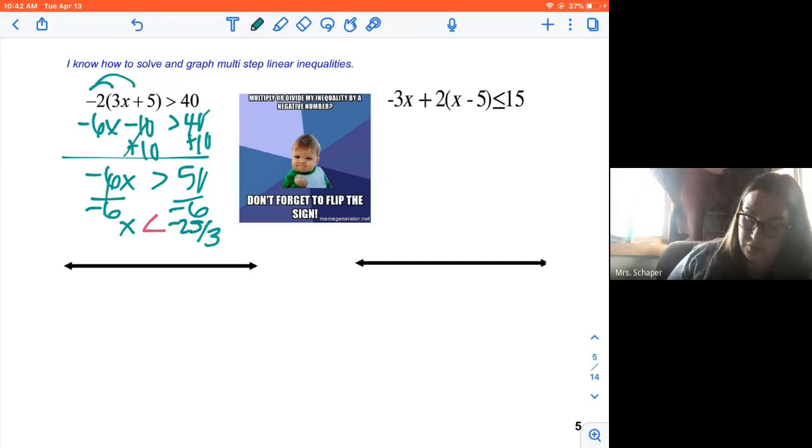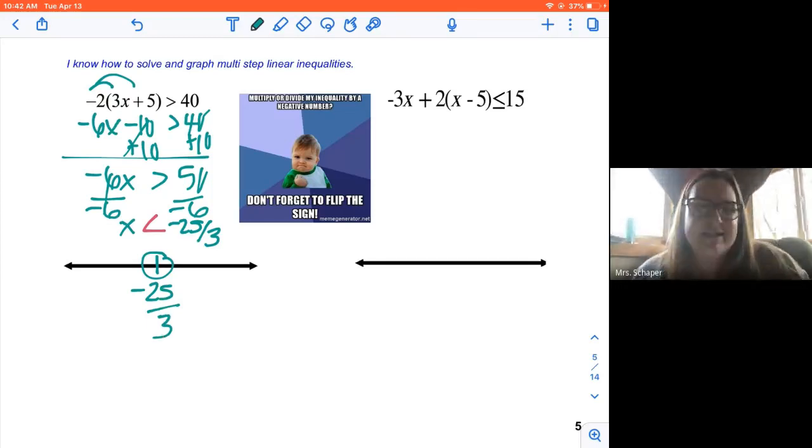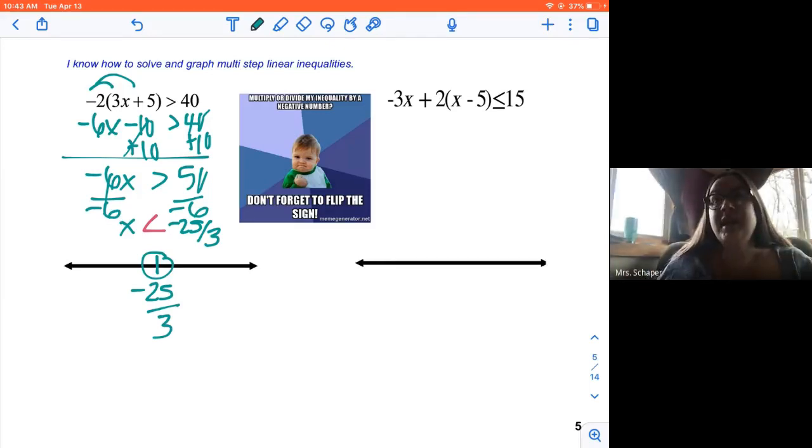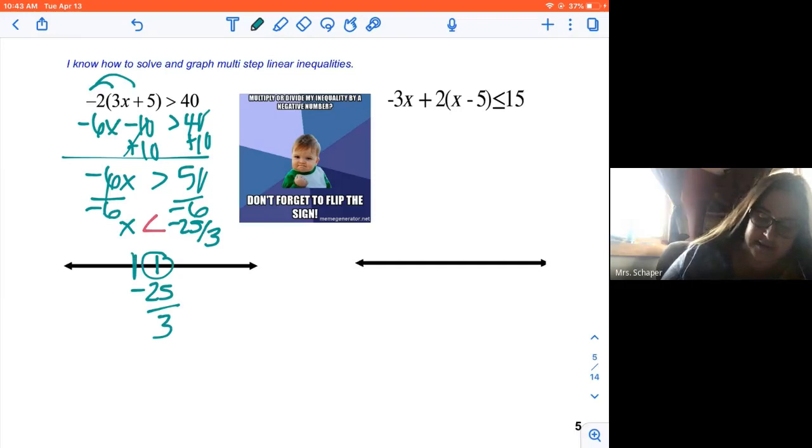Okay, so we're going to do an open circle on negative 25 thirds. Now, if you wanted to write it as negative 8 and one third, that's fine too. That doesn't bother me. And x is less than that. So a number less than that is going to go this direction.